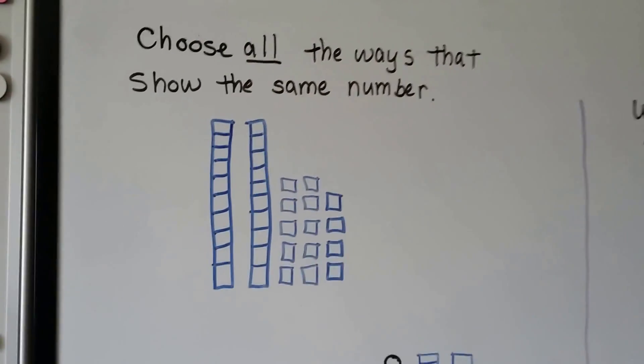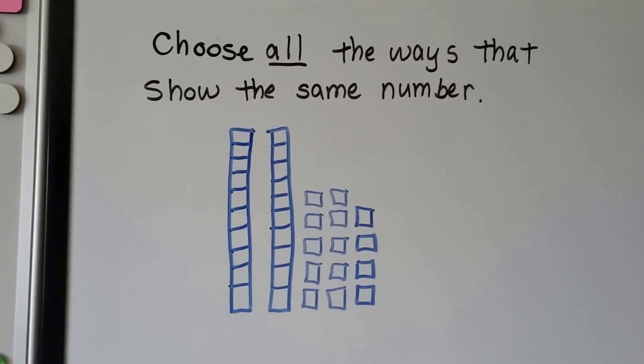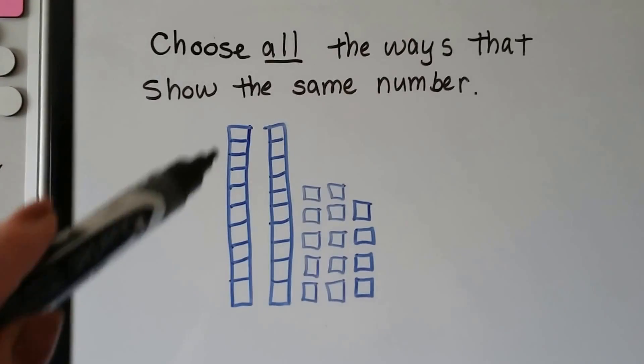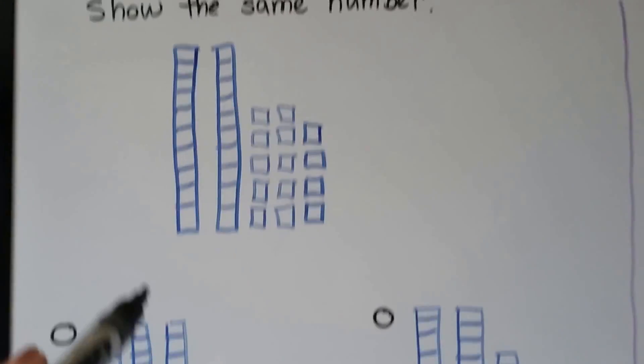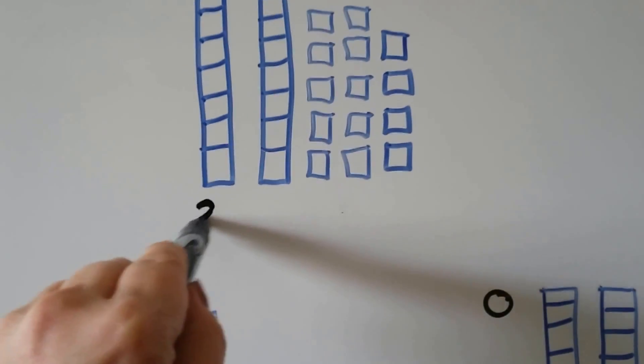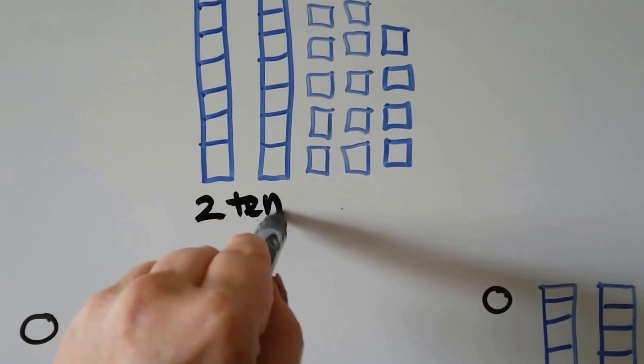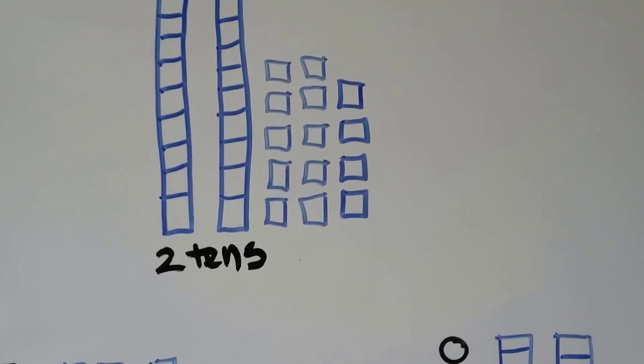We can choose all the ways that show the same number. Here we have a bar of 10, a rod of 10, and another rod of 10. So we have two tens.